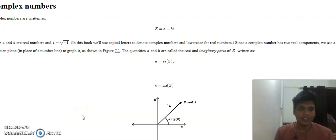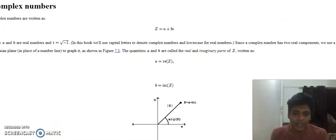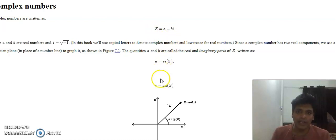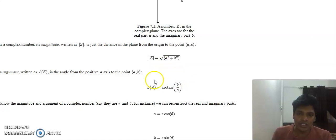Let us continue our discussion with angle and magnitude. We know a complex number z = a + bi. The magnitude is root of (a² + b²), and the argument is tan inverse of b/a. This is the basic which we all know.